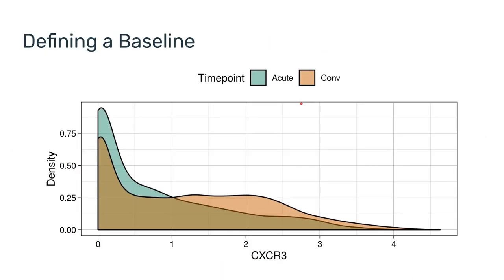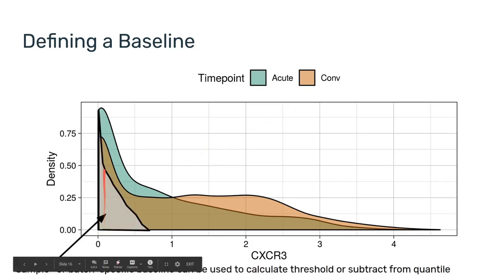Another issue, which I'm going to touch on only briefly, is using a baseline. If you have a spiking sample or a reference sample that you include in every sample or every batch, you can use that as the baseline. And you can either use it to calculate a threshold, positive or negative, or you can calculate a quantile on it and subtract it from your quantile on the experiment data in order to accommodate that baseline.